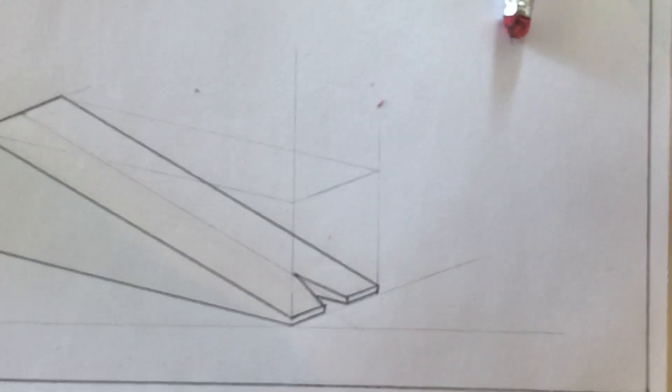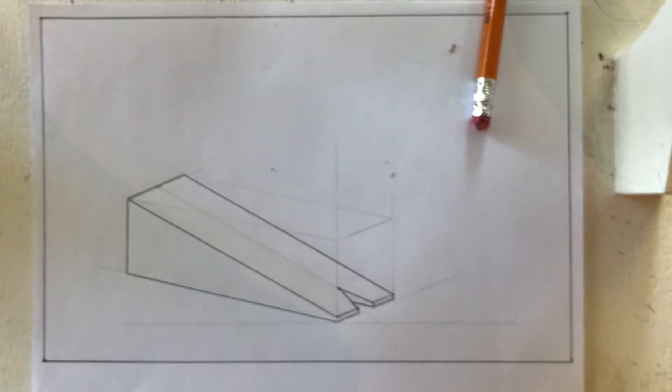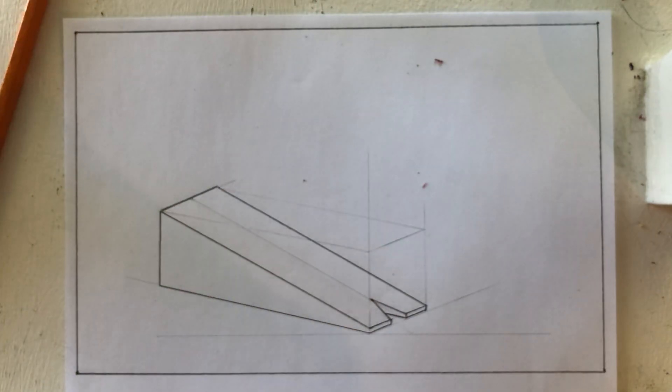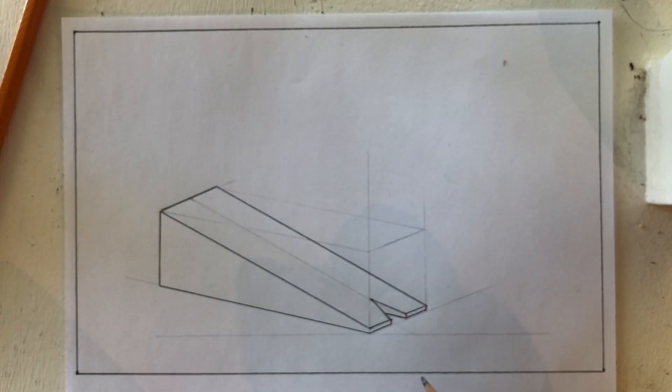All right. Zoom back out and fix my image. There we go. So there we have isometric drawing number three.